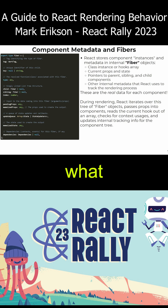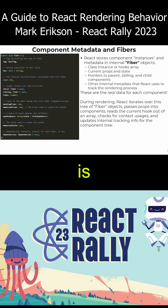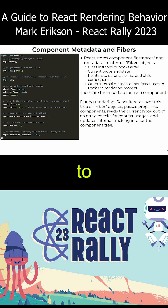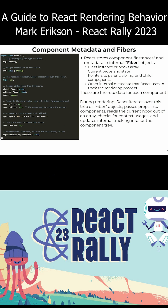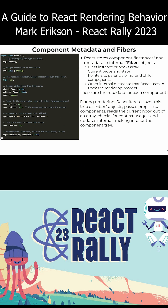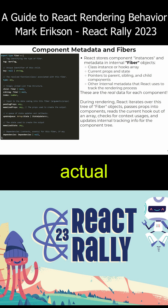And it keeps track of what is the type of the component, what is its current props, its current state, any of the hooks that are attached to it, children, siblings, and a bunch of other internal data. And so these represent the actual current component tree.